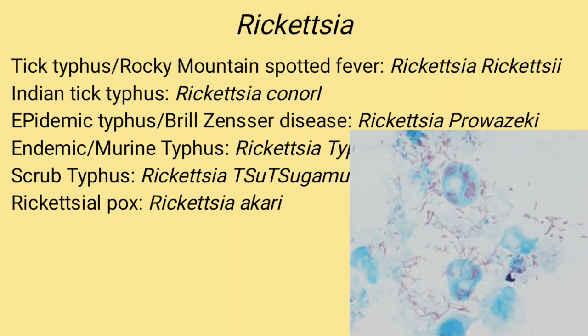Rickettsia mnemonics: Tick typhus is caused by Rickettsia rickettsii, also called Rocky Mountain spotted fever — R for Rocky Mountain, R for Rickettsia. Indian tick typhus is caused by Rickettsia conorii — conorii has 'i' for Indian. Epidemic typhus (Brill-Zinsser disease) is caused by Rickettsia prowazekii — P for prowazekii and epidemic. Endemic typhus is caused by Rickettsia typhi. Scrub typhus (ST) is caused by Rickettsia tsutsugamushi. Rickettsial pox is caused by Rickettsia akari.